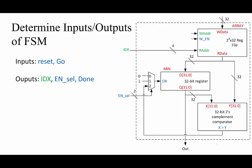Now that we have our data path, we can determine what inputs and outputs we will use in our finite state machine. We will have the standard reset and a go signal that tells us when to start our calculation. Our states will determine which address in the array to read from, and enable select will control the multiplexer. Finally, we will have a done flag that we will set to one when the computation is finished.